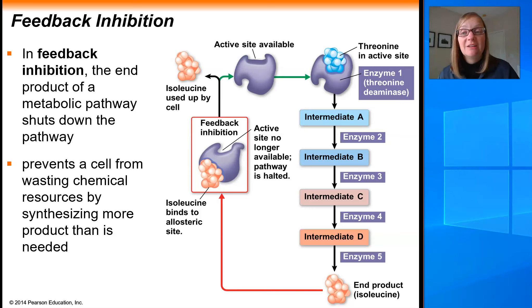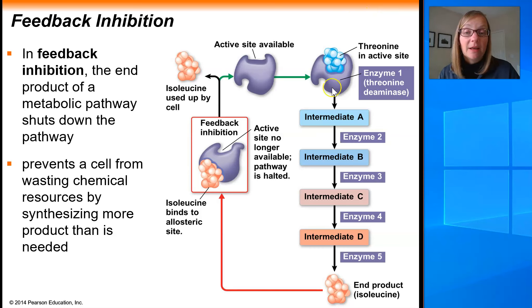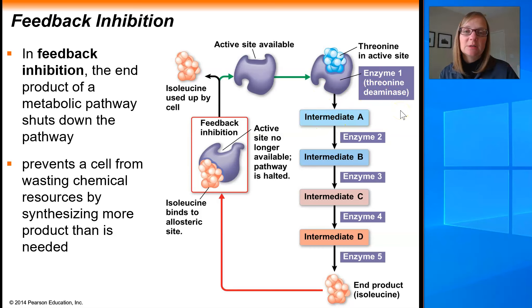Feedback inhibition means that the product of a process slows down or stops the process that created it. The example here is the creation of the amino acid isoleucine from a different amino acid, threonine. If a cell has a lot of threonine and is low on isoleucine, it has a series of enzymes that can convert threonine into isoleucine. We're focusing on the first enzyme in this pathway, called threonine deaminase, which performs the first step of converting threonine to the first intermediate.